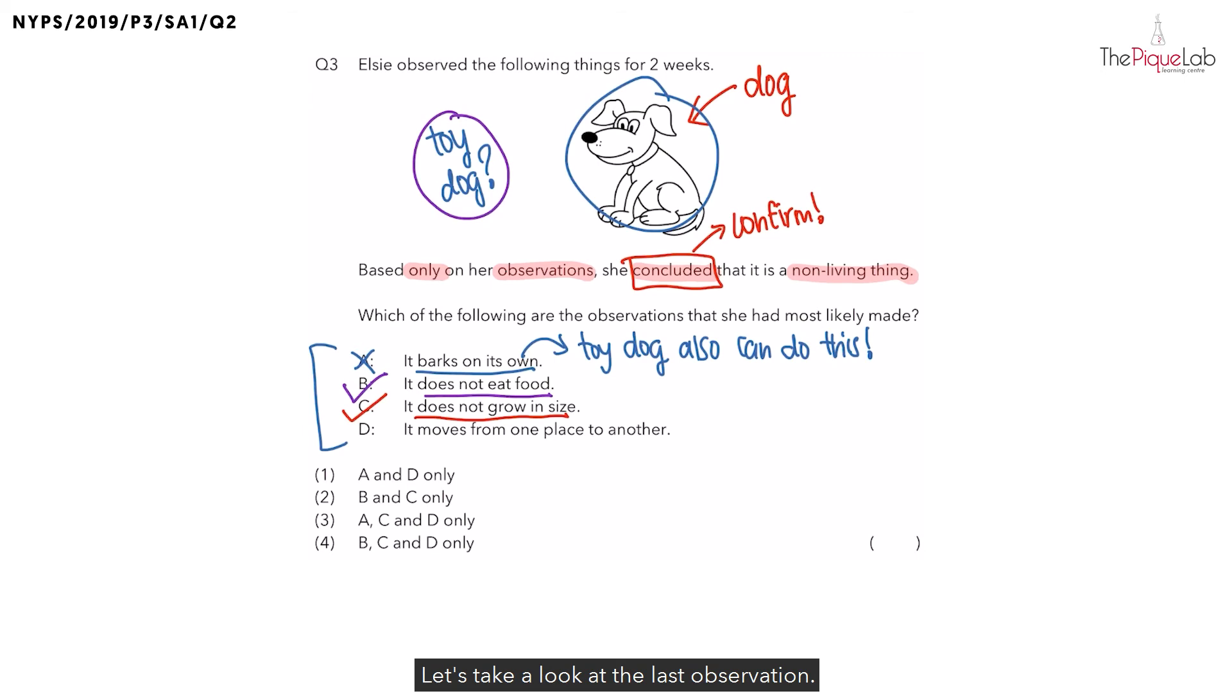Let's take a look at the last observation. It moves from one place to another. Similarly, let's consider the two scenarios again. If this dog is a living dog, would it be able to move from one place to another? Definitely, because living things can move by themselves.